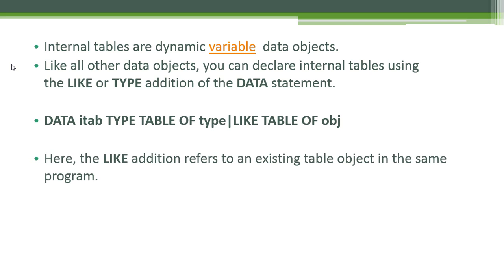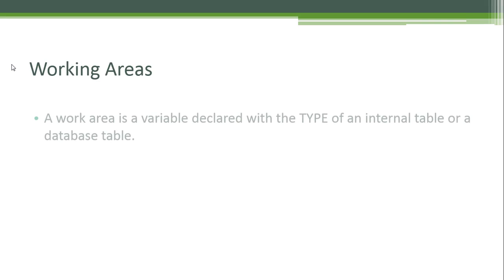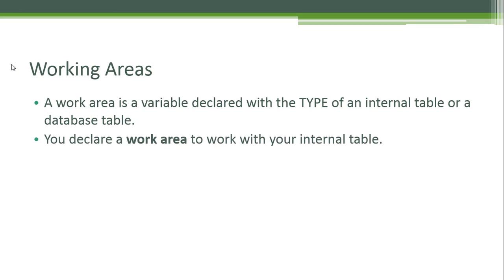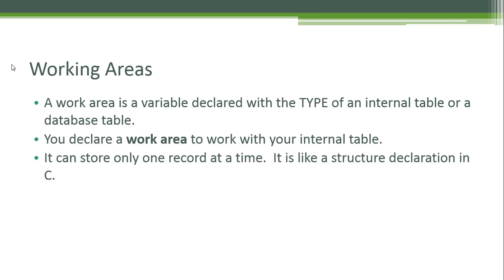The LIKE addition refers to an existing table object in the same program. A work area is a variable declared with the type of an internal table or a database table. You declare a work area to work with your internal table. It can store only one record at a time — it is like a structured declaration in C.